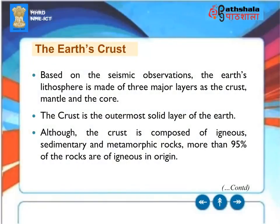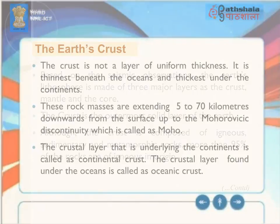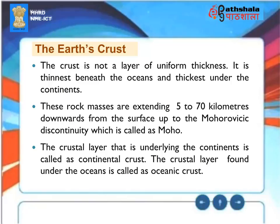The Earth's crust. Based on seismic observations, the earth's lithosphere is made of three major layers: the crust, mantle, and the core. The crust is the outermost solid layer of the earth. Although the crust is composed of igneous, sedimentary and metamorphic rocks, more than 95% of the rocks are igneous in origin. The crust is not a layer of uniform thickness — it is thinnest beneath the oceans and thickest under the continents. These rock masses extend 5 to 70 km downwards from the surface up to the Mohorovičić discontinuity, called the Moho. The crust underlying the continents is called continental crust, and the crust found under the oceans is called oceanic crust.